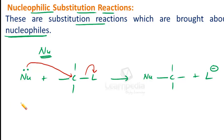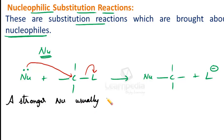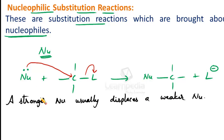In all these reactions, a stronger nucleophile usually displaces a weaker nucleophile. So if the incoming species is a stronger nucleophile, then the leaving group — the weaker nucleophile — can be displaced.